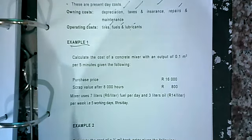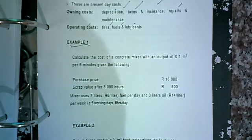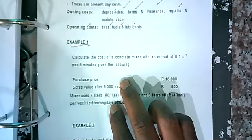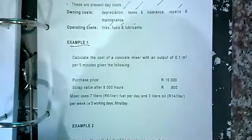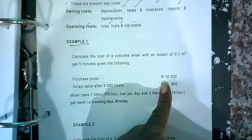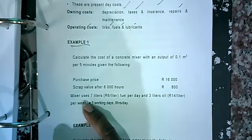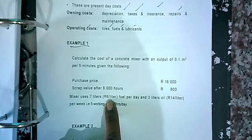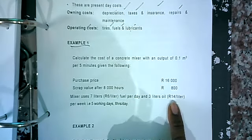Page 10, first example. Example one: calculate the cost of a concrete mixer with an output of 0.1 cubic meters every five minutes. Given the following: you bought it at 16,000; after 8,000 hours it's only valued at 800. The mixer uses seven liters of fuel and the cost is six rand per liter per day.